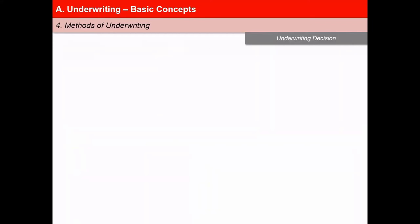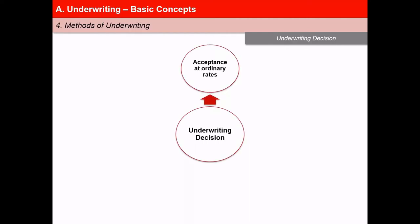Let us now consider the various kinds of decisions that underwriters may take with regard to a life proposed for underwriting. First, acceptance at ordinary rates — the most common decision — indicates that the risk is accepted at the same rate of premium as would apply to an ordinary or standard life; the premium is charged as per tabular rates. Second, acceptance with an extra premium — the most common way of dealing with the large majority of substandard risks — involves charging extra premium over the tabular rate of premium.